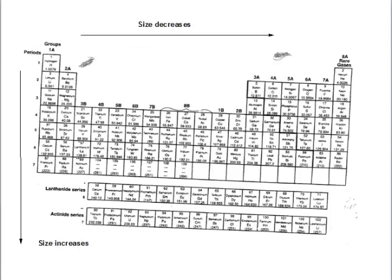You can summarize these trends here. Size decreases as you go across a row. Size increases as you go down a column of the periodic table. So again, turning to this section, oxygen is smaller than nitrogen. Phosphorus is larger than nitrogen, and arsenic will be larger than phosphorus, and so on.